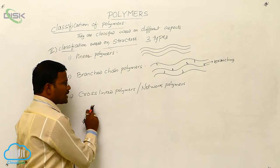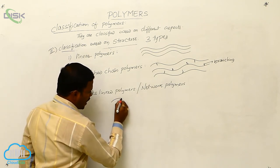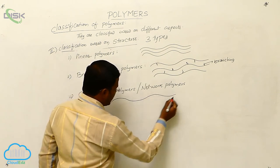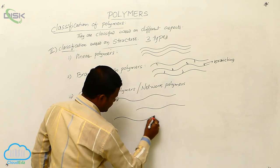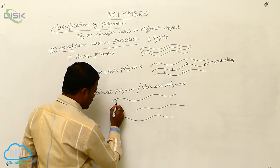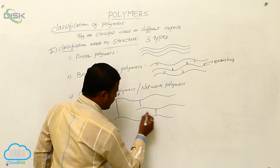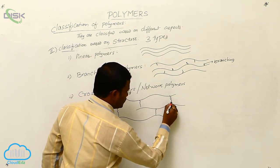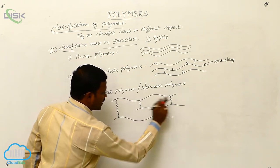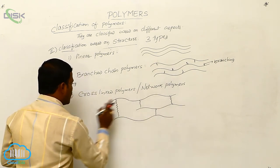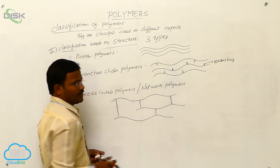Cross-linked polymers, also called network polymers, are also present with a linear shape. But here, in between two linear chains, there is a formation of binding interactions. Such type of polymers are called as cross-linked polymers or network polymers.